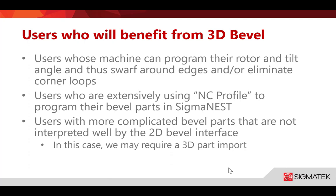Users who are extensively using NC by Profile to program bevel parts in SigmaNest will also benefit. If you're doing a lot of manual programming in part mode instead of just clicking a contour and saying 'this is a top knife' and letting AutoNC handle it, this is definitely going to benefit you. There are a lot of features that make NC by Profile less necessary, though you still have the ability to use it.